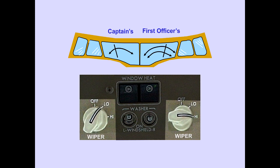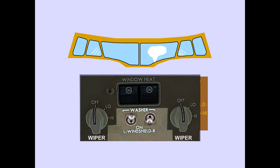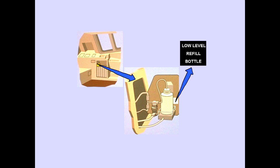The windshields are provided with two-speed wipers. A washer switch spring-loaded to off is provided for each windshield. Holding a windshield washer switch on directs fluid to the respective windshield; fluid is dispensed while the switch is held on. The windshield washer reservoir is located behind the door in the storage area on the captain's side panel and has a sight gauge indicating the refill level.